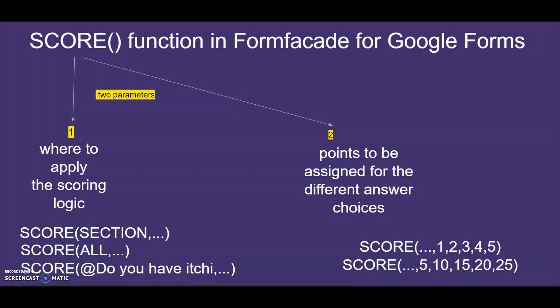It takes two input parameters. The first parameter specifies whether the score should be calculated for all questions across all the sections, or within a section, or only for the questions that matches the search term in the description. The second parameter is the points to be assigned for different answer choices A, B, C, D, E, etc.